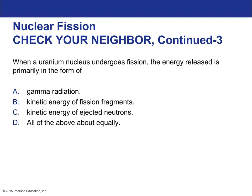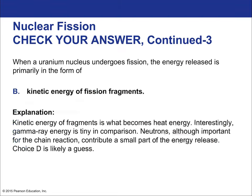When a uranium nucleus undergoes fission, the energy release is primarily in the form of kinetic energy of the fission fragments. We often think of fission as creating pure energy, but kinetic energy is a form of energy — essentially heat energy from random particle motion. We use that heat to boil water, which drives steam generators to produce electricity. There is some pure radiant energy as well, but most of it is kinetic energy of the fragments.